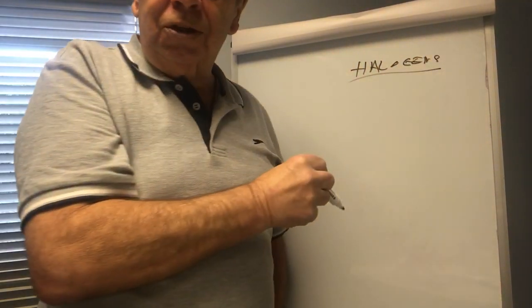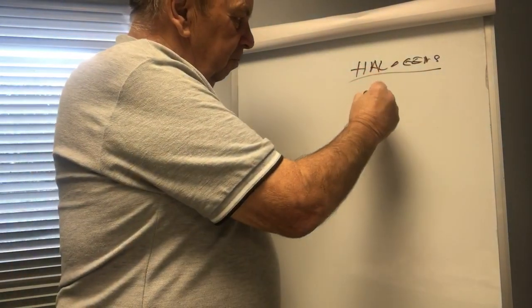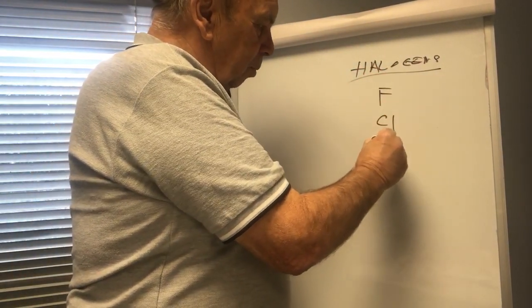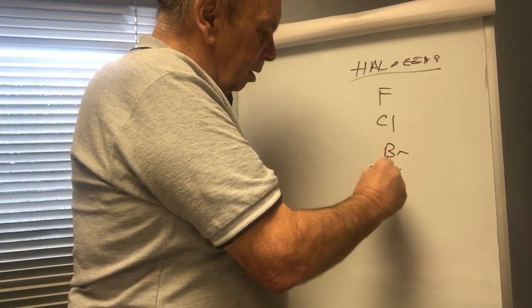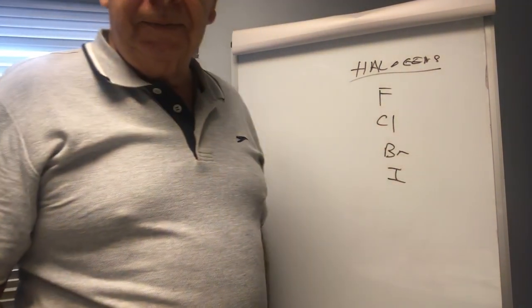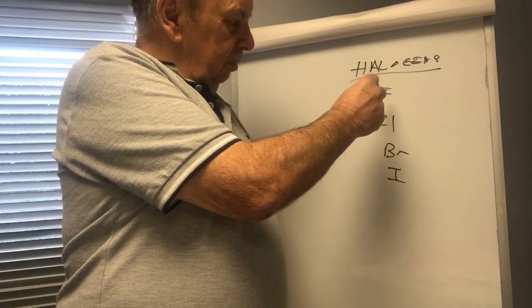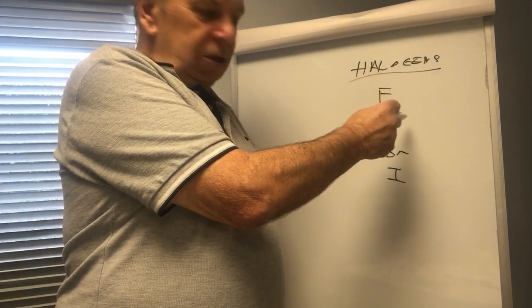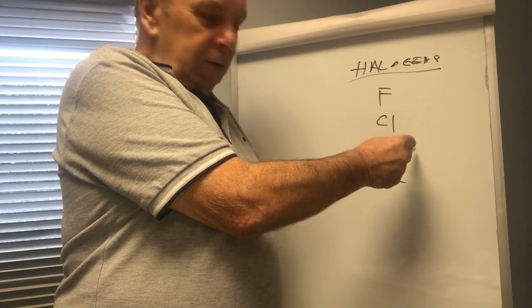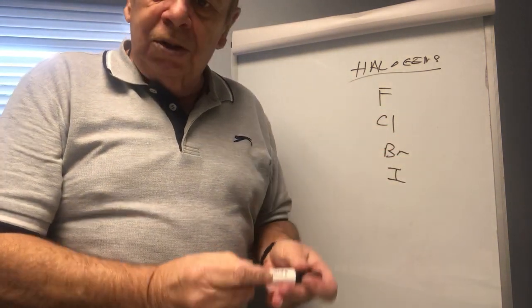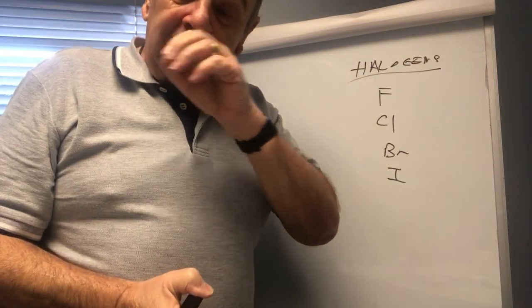Halogens, halogens. And I mentioned fluorine, chlorine, bromine, iodine, astatine. Fluorine is a gas, chlorine is a gas, bromine is a liquid, iodine is a solid.